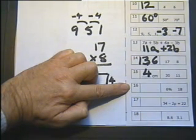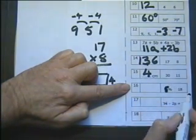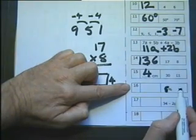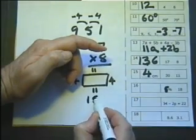Number 16: If 5% of a number is 18, what is 25%? Well, because there are 5 fives in 25, we're looking at 5 times 18. Now again, 5 times 18.